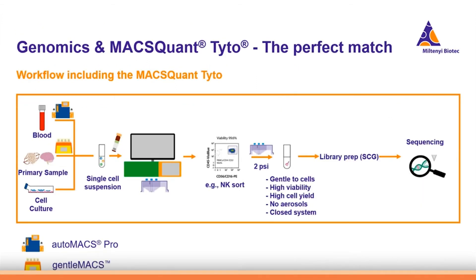A genomics workflow using the MACSQuant Tyto could look like the following. First, a single-cell suspension has to be prepared — one could use the GentleMACS system, or cells can be pre-enriched using the AutoMACS Pro. Then cells are sorted on the MACSQuant Tyto and used for sequencing afterwards.